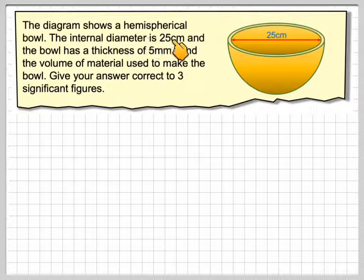The diagram shows a hemispherical bowl. The internal diameter is 25 centimeters, so that means from here to here we have 25 centimeters, not including the thickness. And the bowl has a thickness of 5 millimeters. Find the volume of material used to make the bowl, give your answer correct to 3 significant figures.